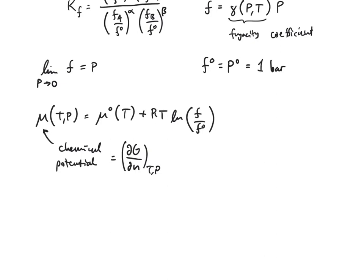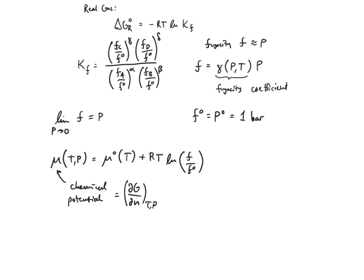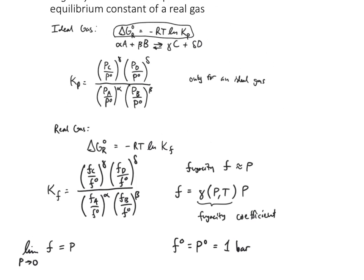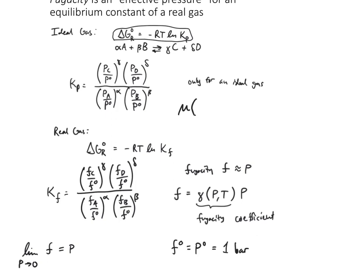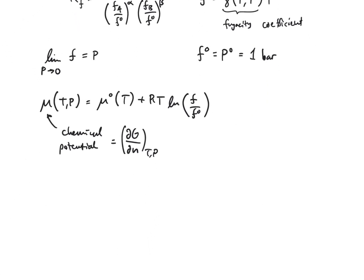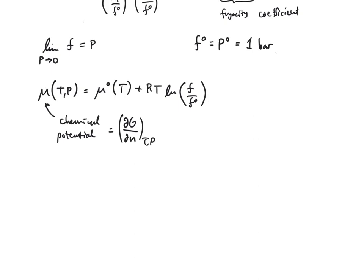That expression is what we used to construct the fugacity equilibrium constant. That is what applies for a real gas. For an ideal gas, the equivalent expression is that the chemical potential at a given temperature and pressure equals the chemical potential at one bar plus RT ln(P/P°). So again, for real gases we're replacing pressure everywhere with fugacity when talking about equilibrium constants and Gibbs free energy.